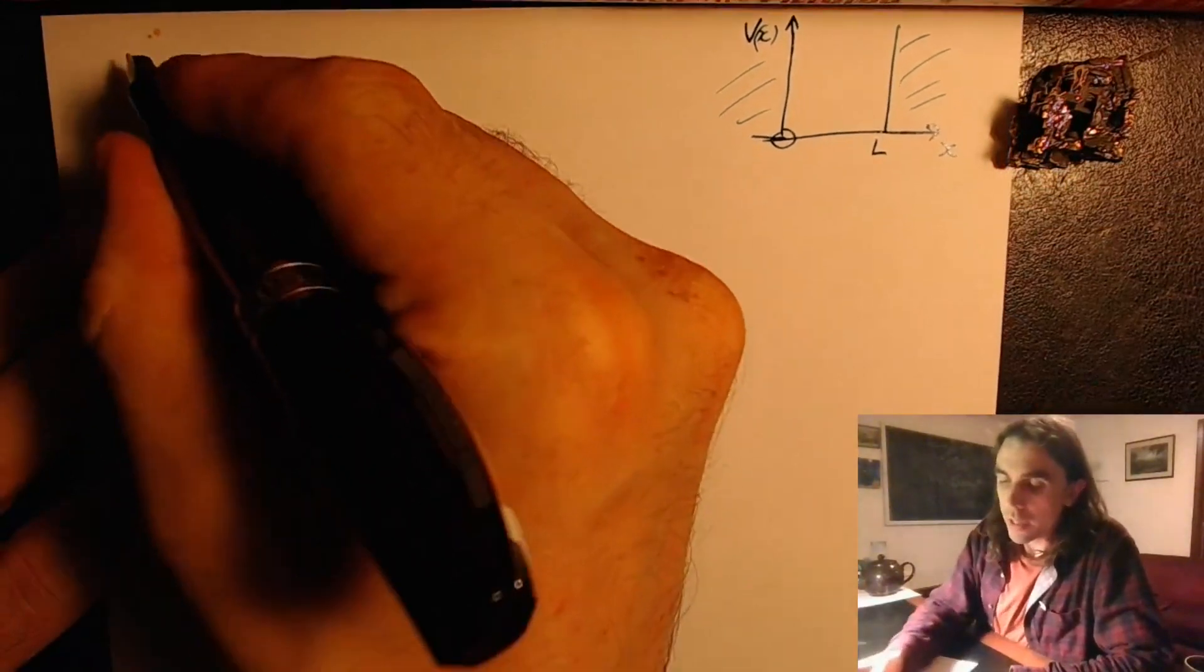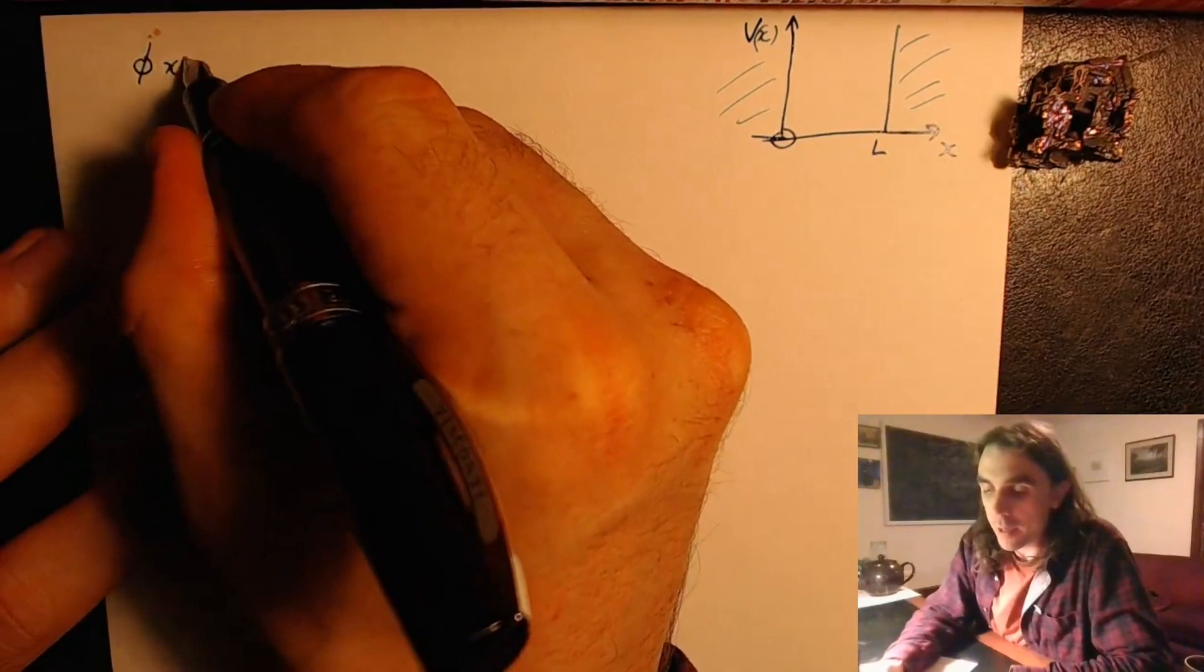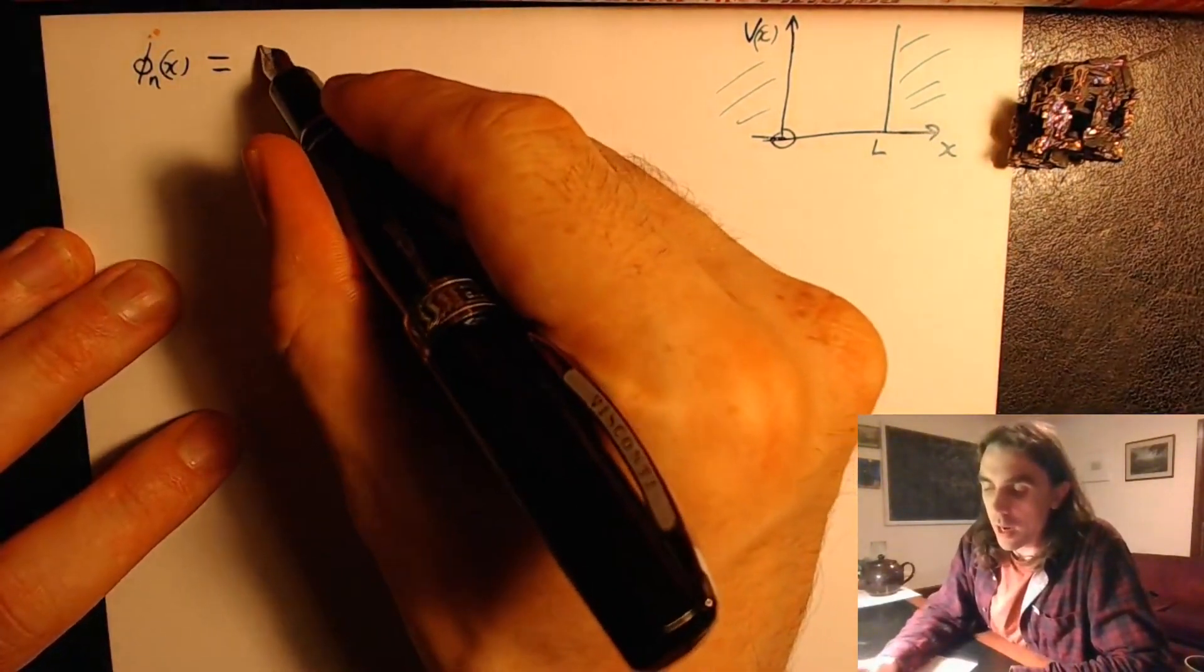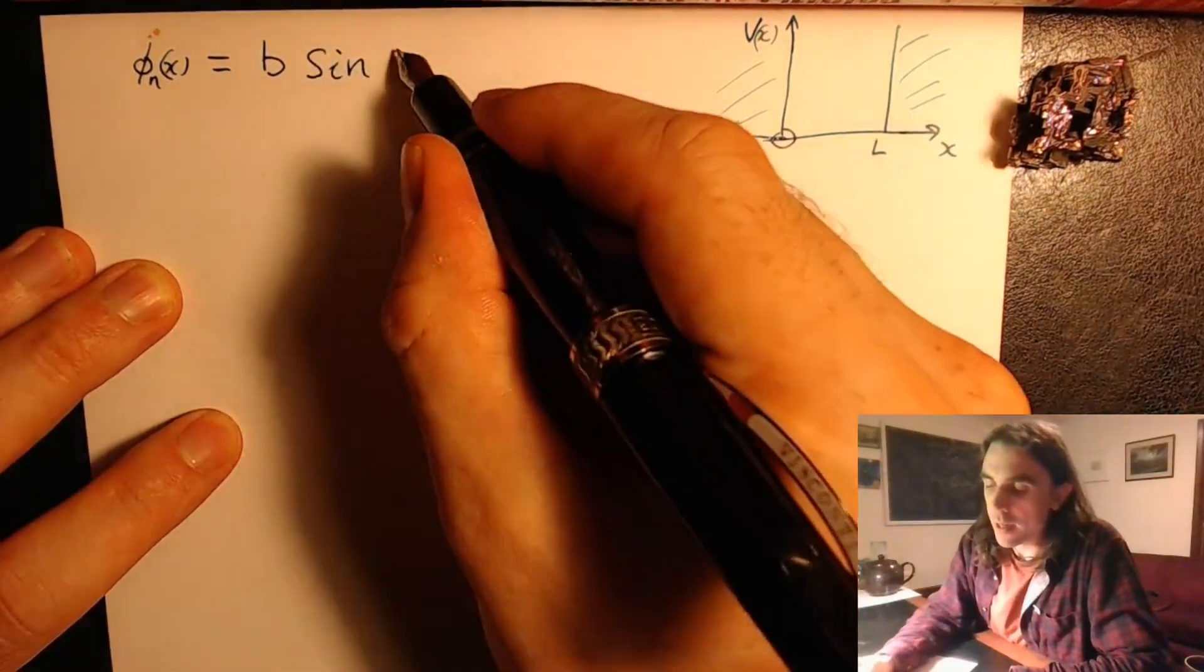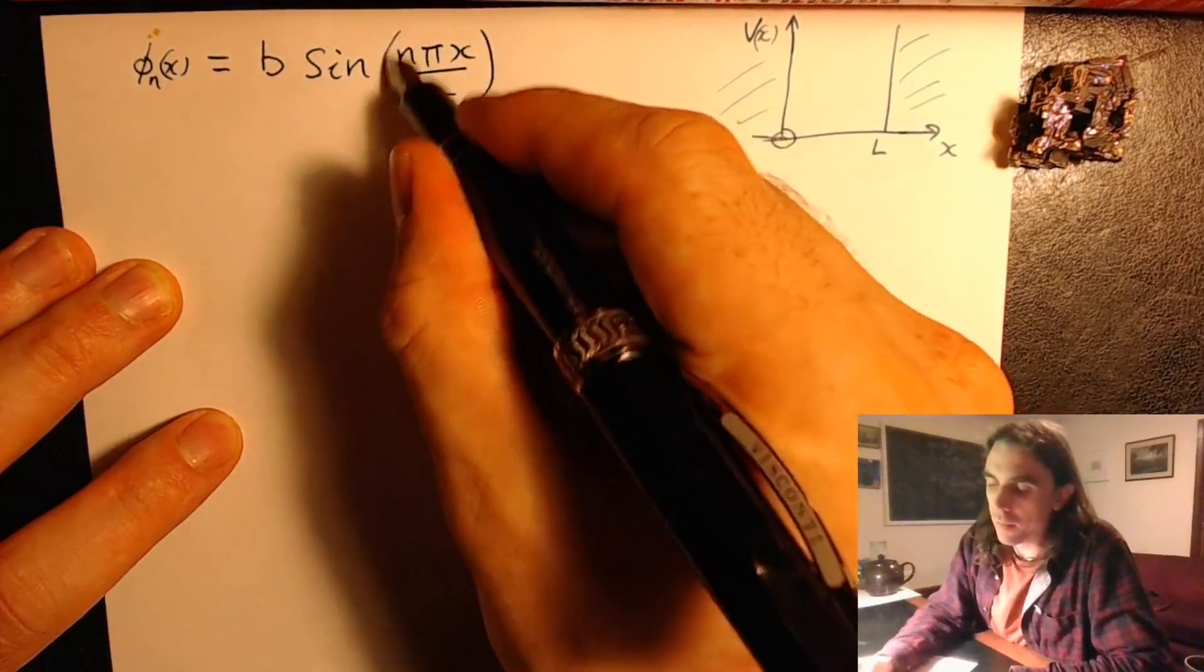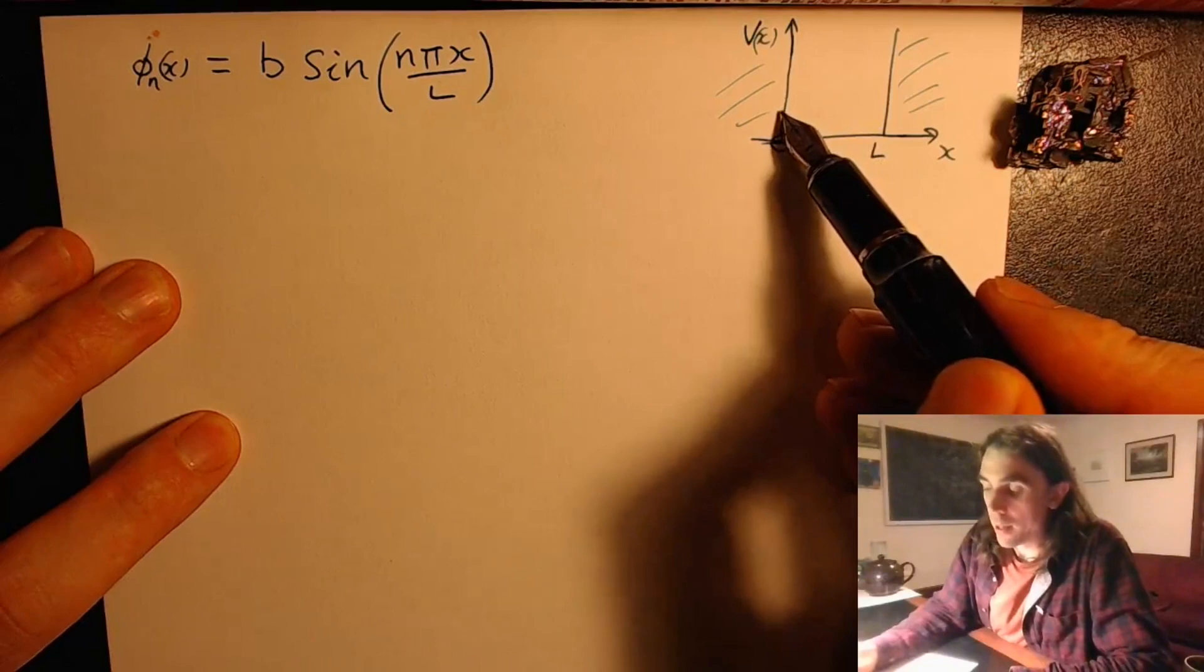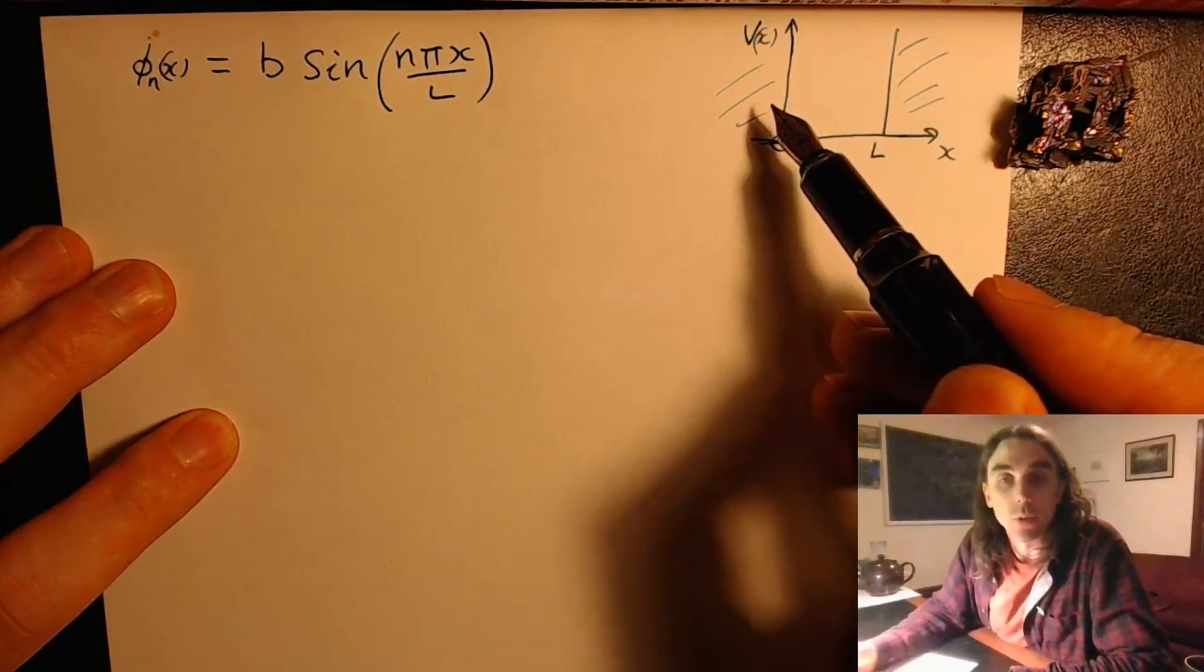We've seen that the energy eigenstates take the form phi n of x equals b sine n pi x over l, which comes about from requiring that the wave function vanish at the points where the potential goes to infinity.